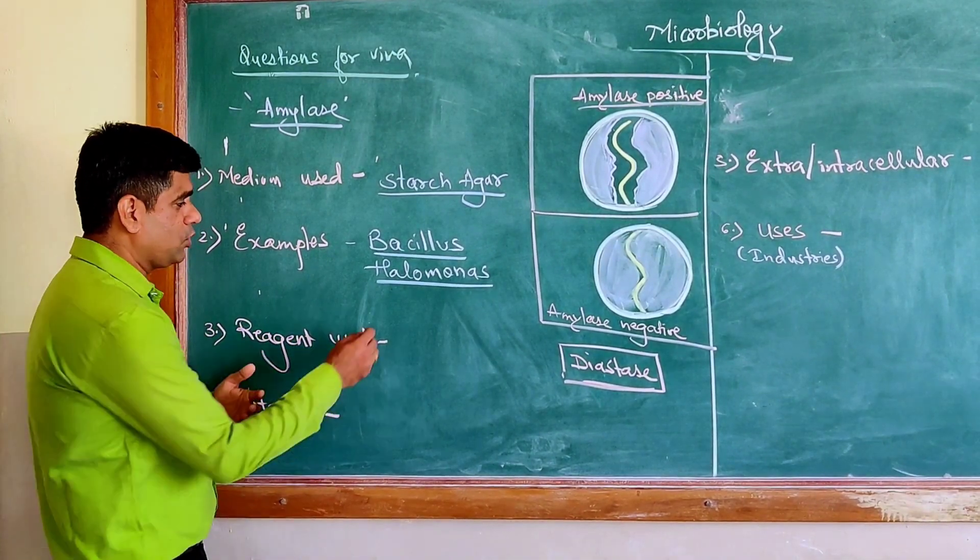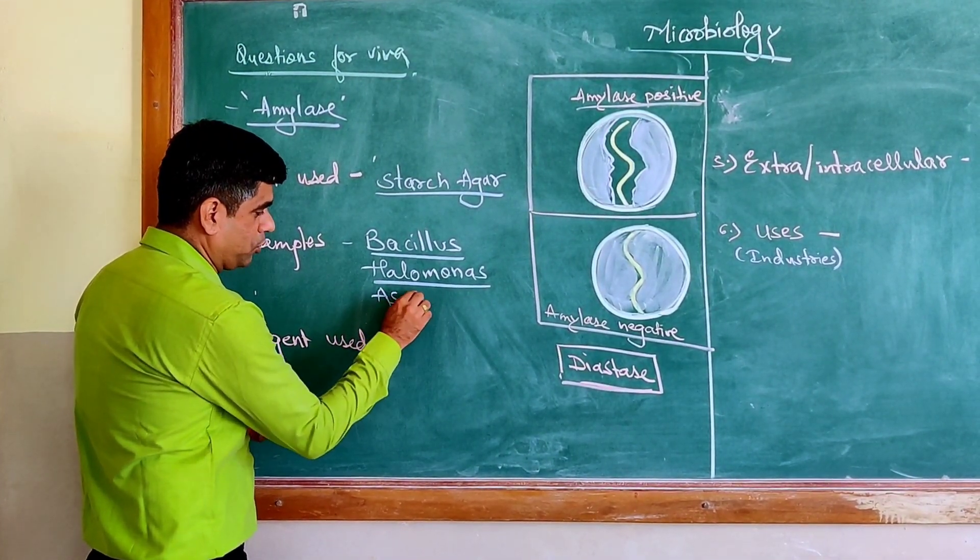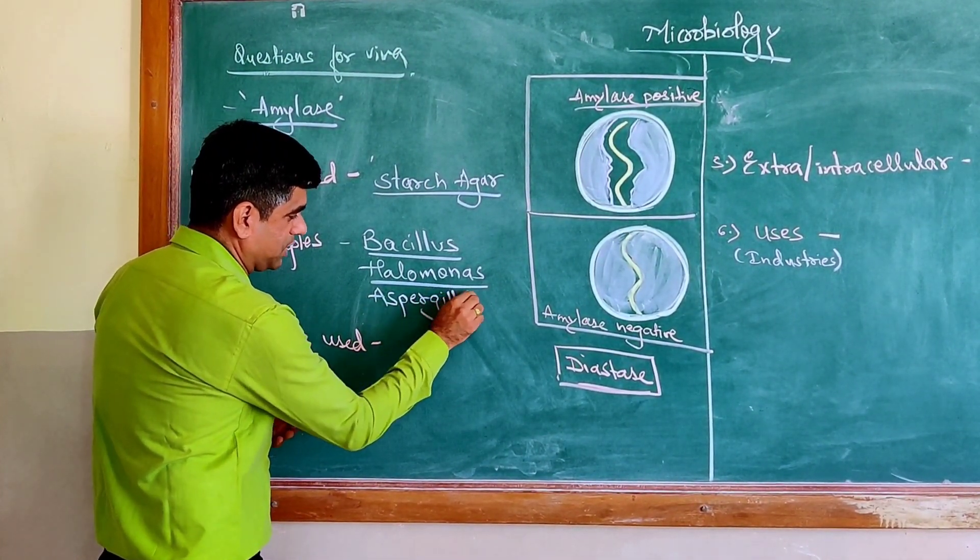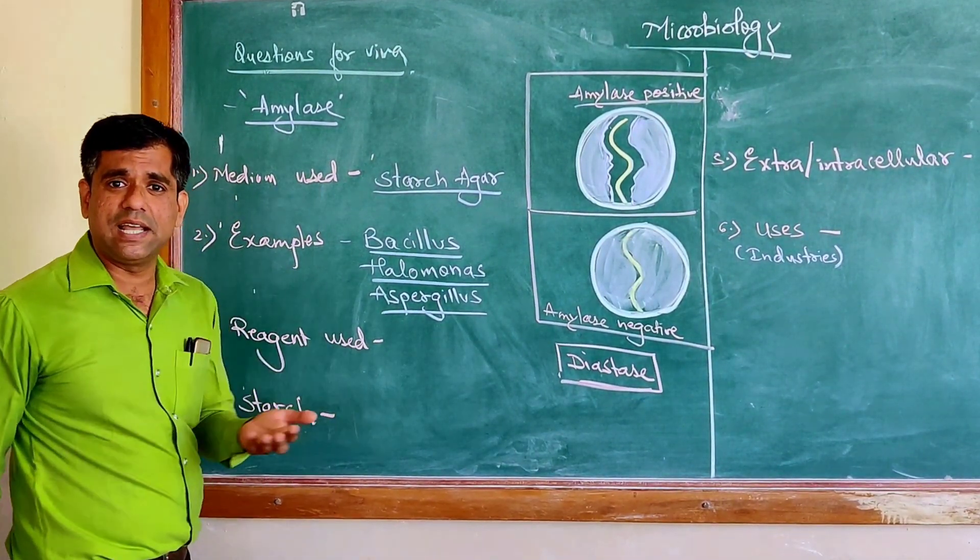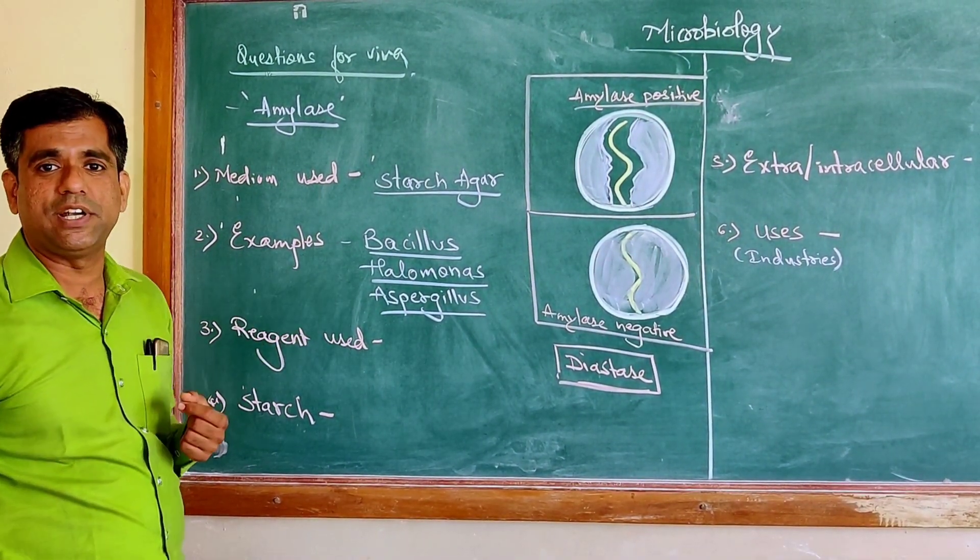There are many fungi which are also known to produce amylase. One of the most common ones is Aspergillus. You also have Penicillium species which are producing this particular amylase.